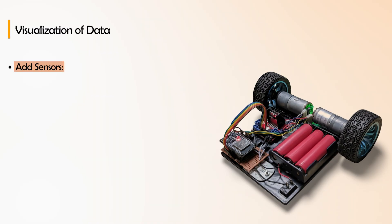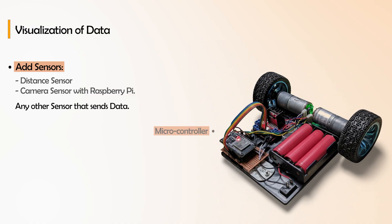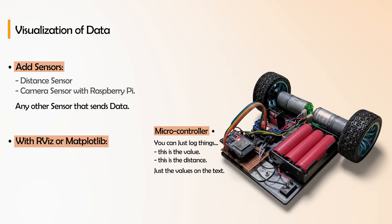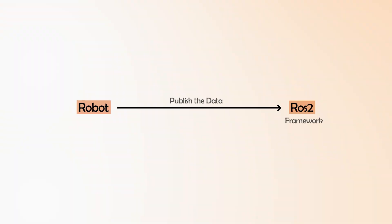The next step is to visualize data in RViz through ROS 2. Your robot will now have sensors — distance sensors, camera sensors with Raspberry Pi, or any other sensor that sends data. This is going to make more sense of why you need ROS, because on a microcontroller you can just log text values, but with RViz or matplotlib you are going to visually see things in 3D space, which makes more sense about the environment so you can analyze and write algorithms precisely.